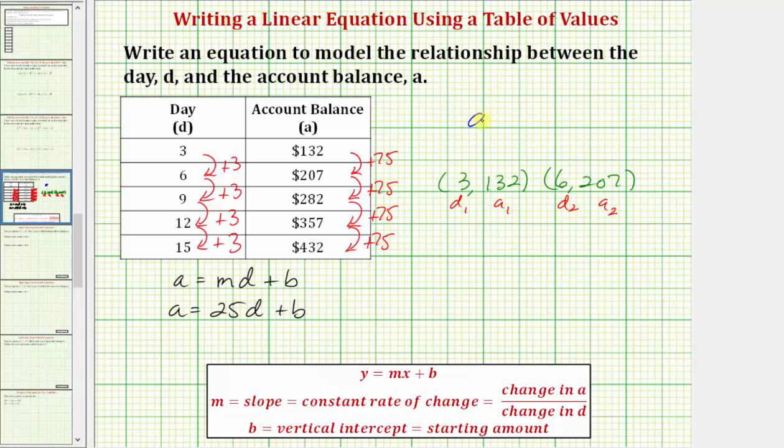So because we know that A equals 25D plus B, one way to find B would be to use one of these ordered pairs, perform substitution for A and D, and then solve for B. Let's use this first ordered pair and substitute 132 for A and three for D.